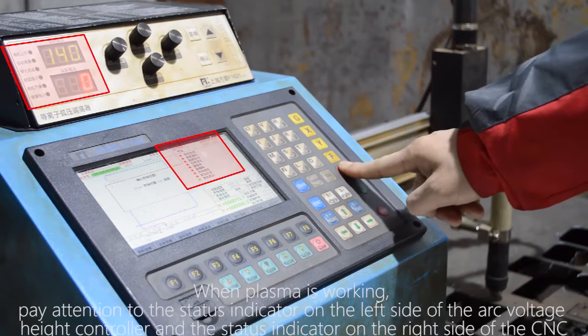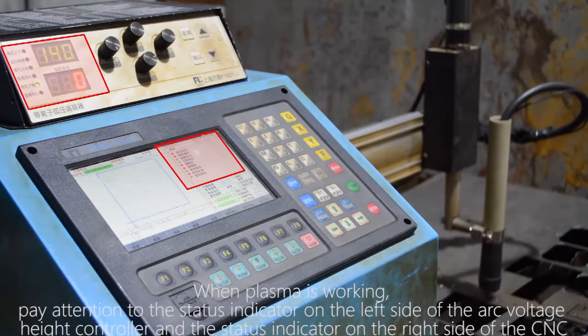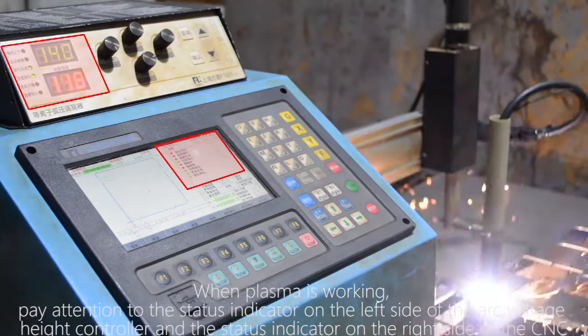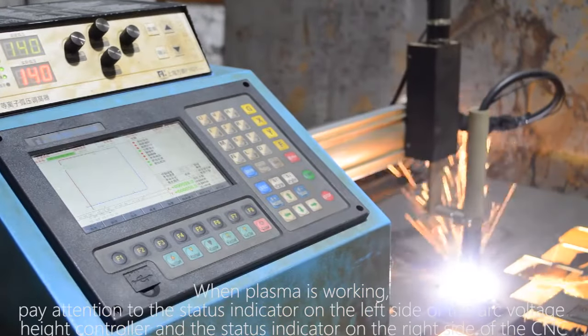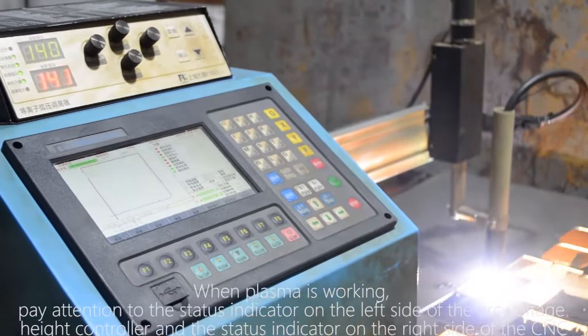When plasma is working, pay attention to the status indicator on the left side of the arc voltage height controller and the status indicator on the right side of the CNC.